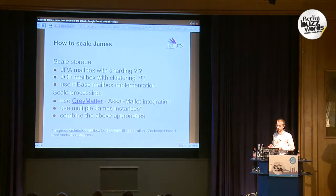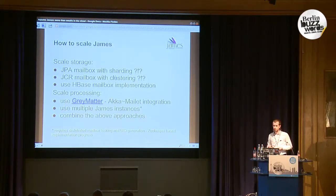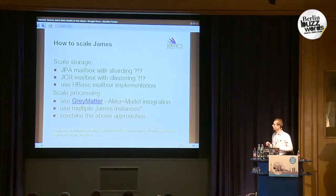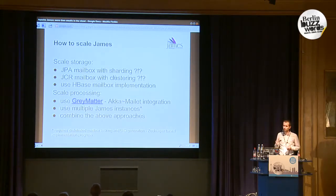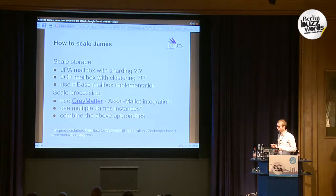If you want to scale processing and have extensive email processing, you can use Camel integration, or run multiple James instances accessing the same mail store. That has some requirements I'm working on — for example, you need distributed mailbox locking and distributed message UID generation. Those are actually pretty easy to implement using Zookeeper. I've done distributed UID generation and I'm working on mailbox locking, so this should be available pretty soon.